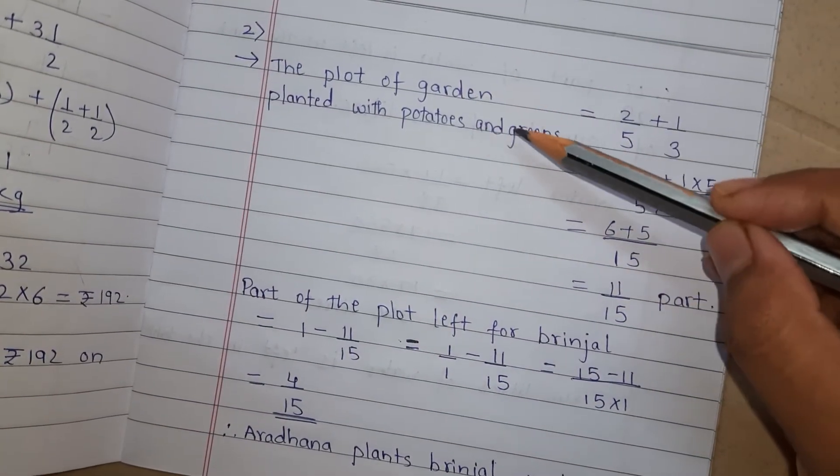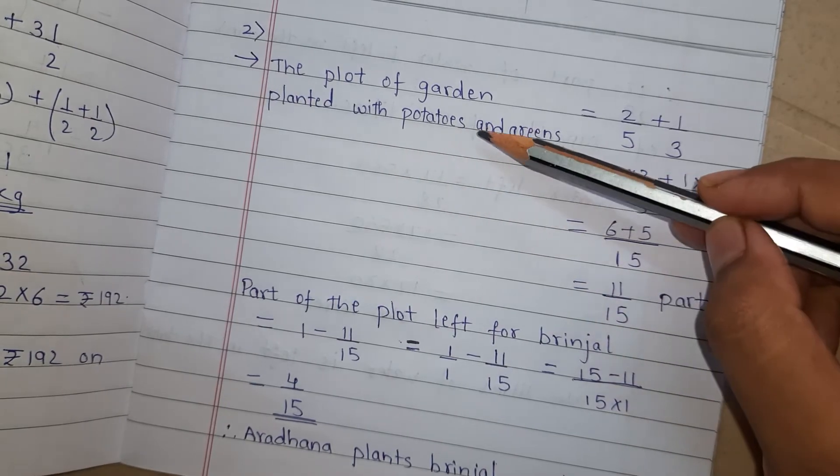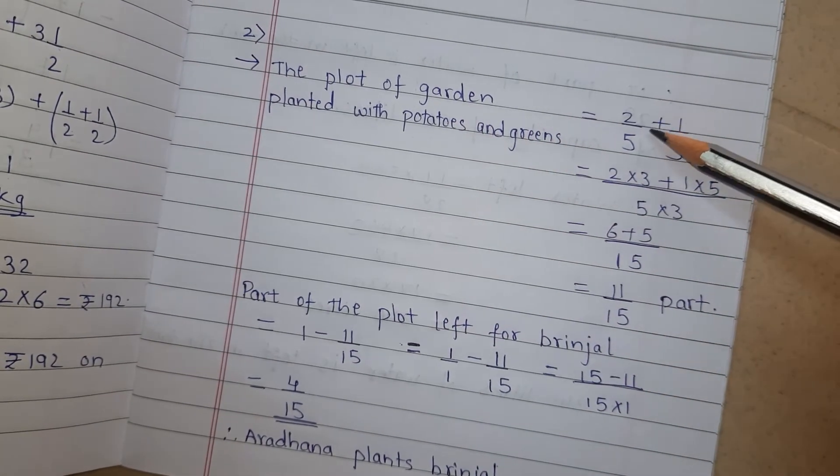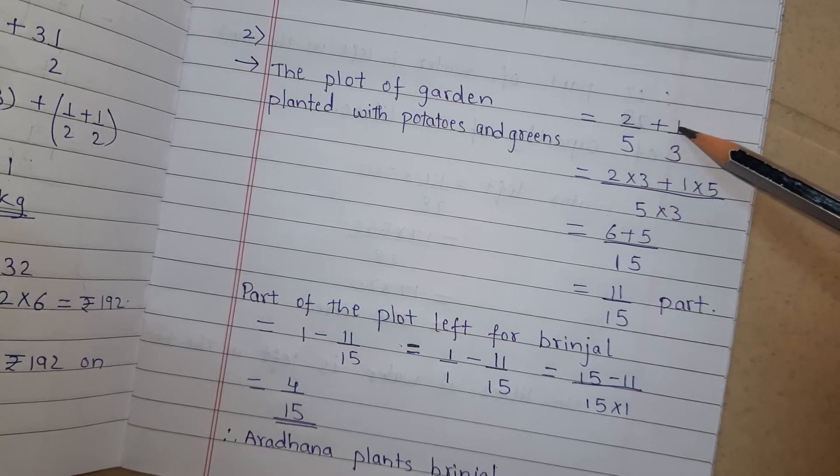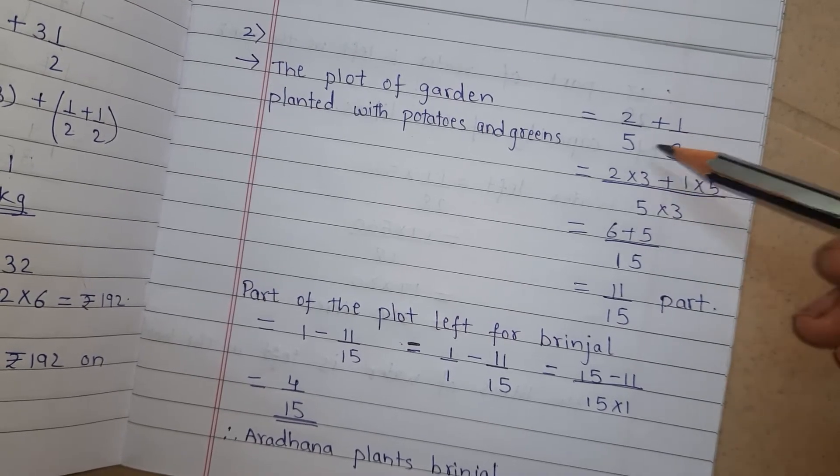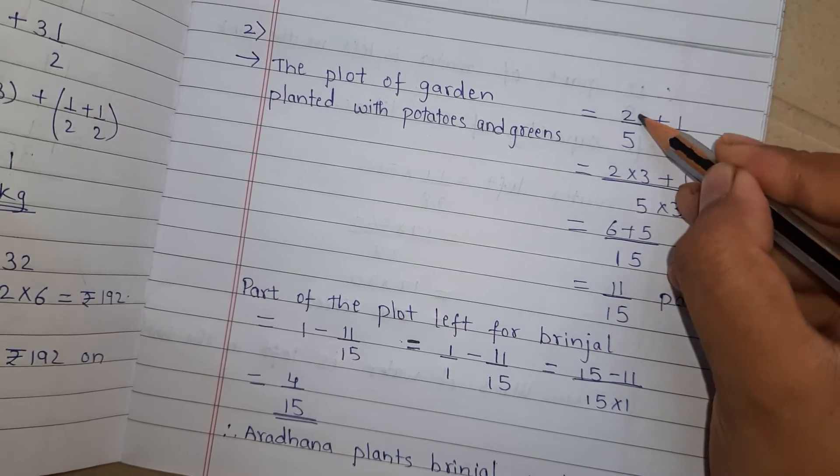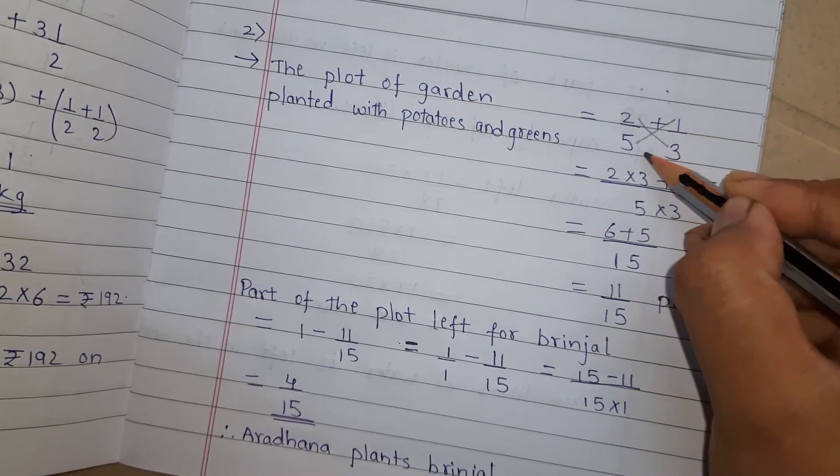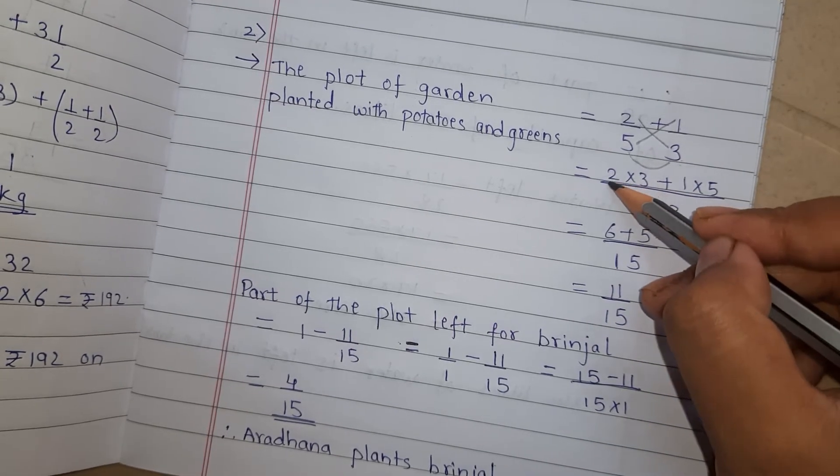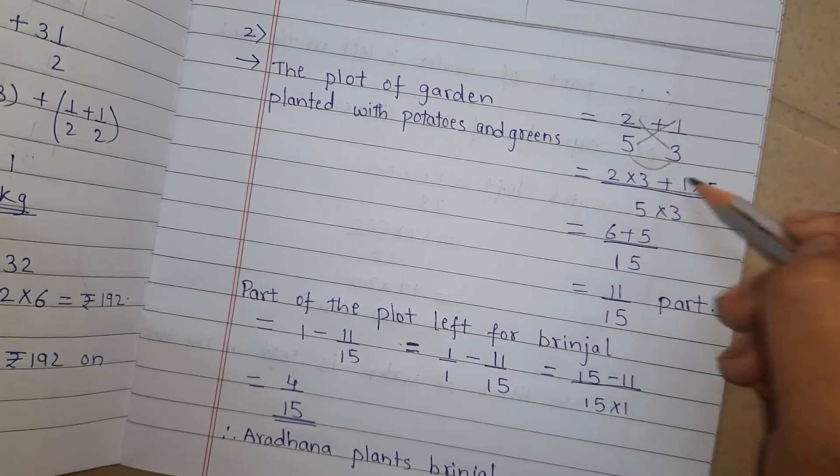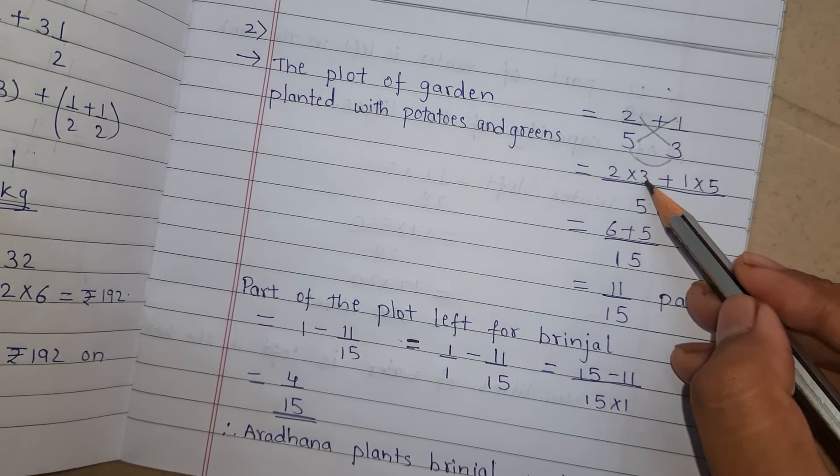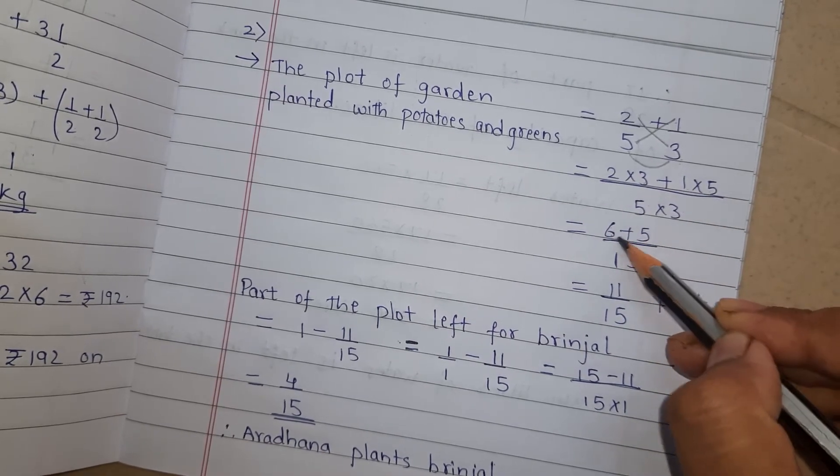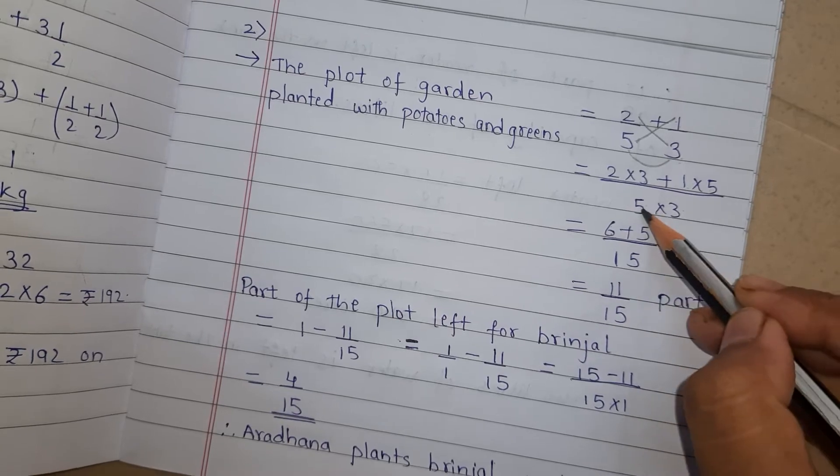Now see here. The plot of garden planted with potatoes and greens. Potatoes and greens together means total of potatoes and green part is 2/5 plus 1/3. Now here denominator is different. So cross multiplication 2 into 3, 1 into 5 and 5 into 3. 2 into 3 plus sign 1 into 5 and denominator is 5 into 3. Now 2 into 3 is 6, 1 into 5 and 6 plus 5 is 11. 5 into 3 is 15.